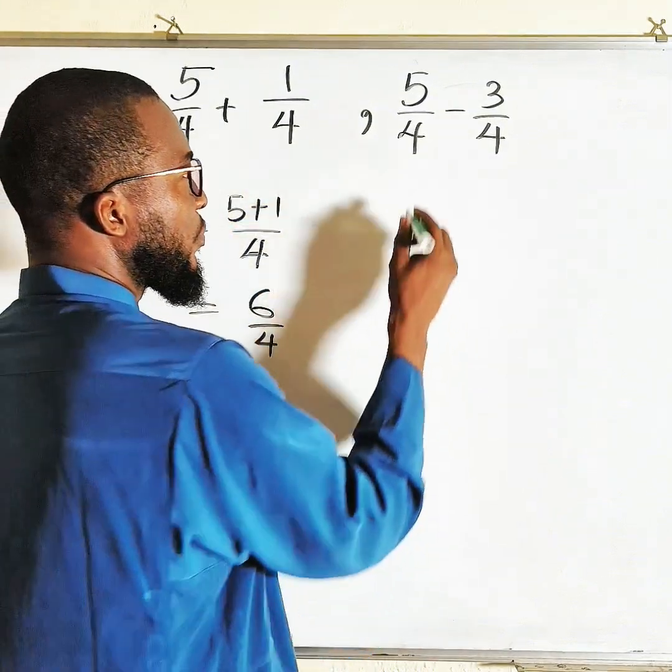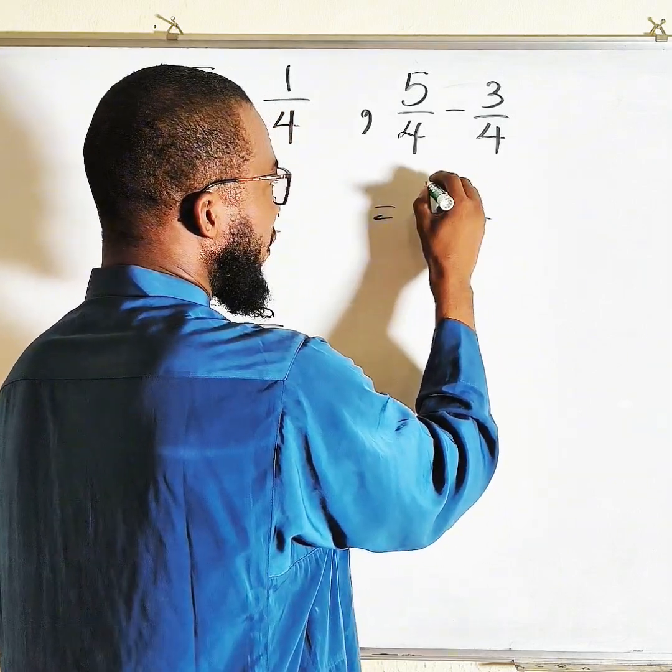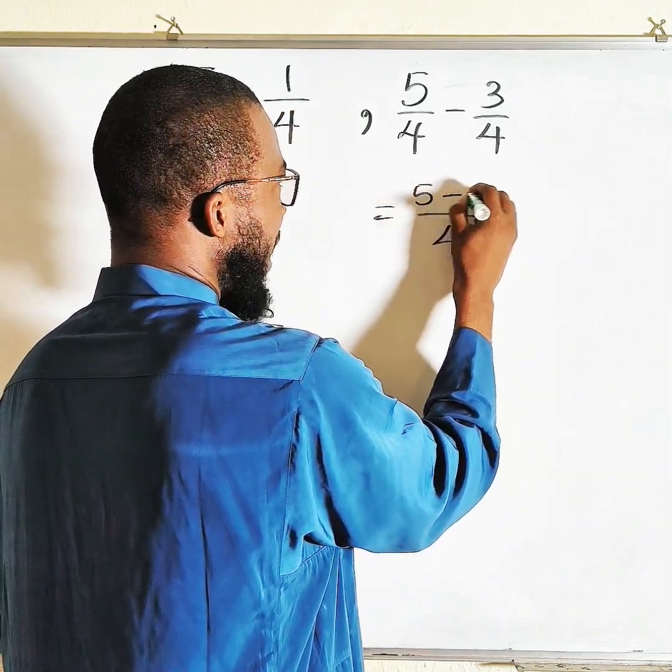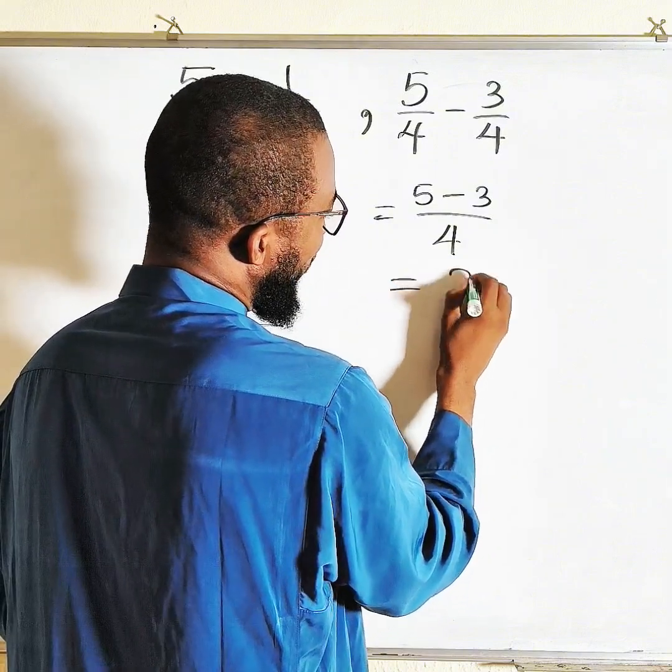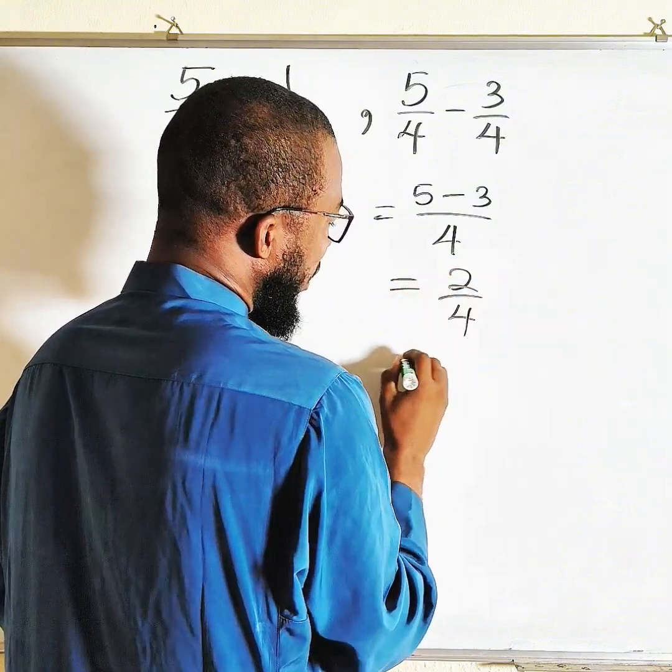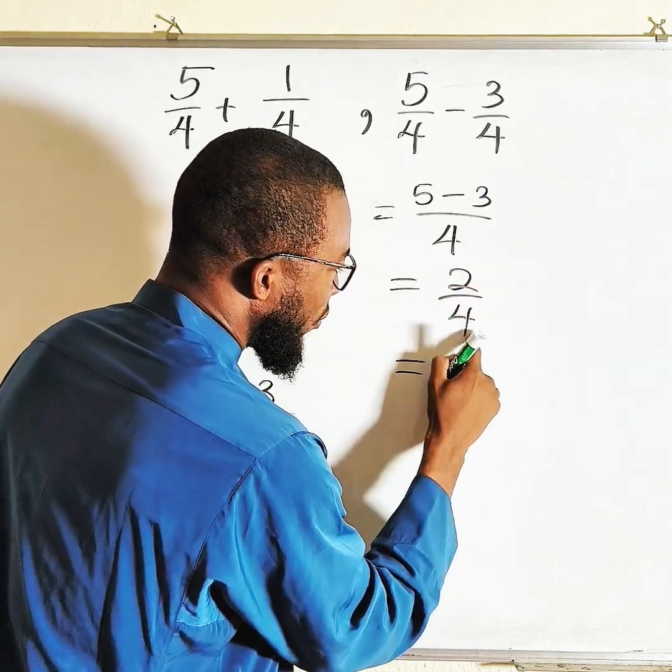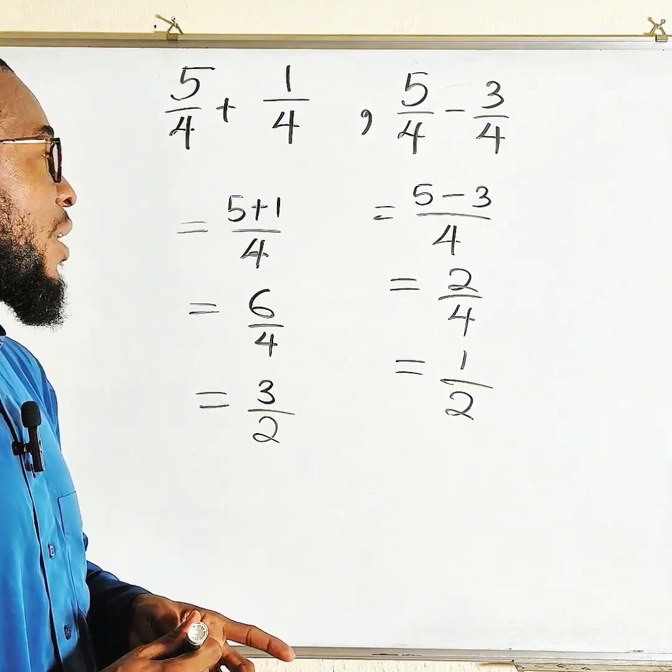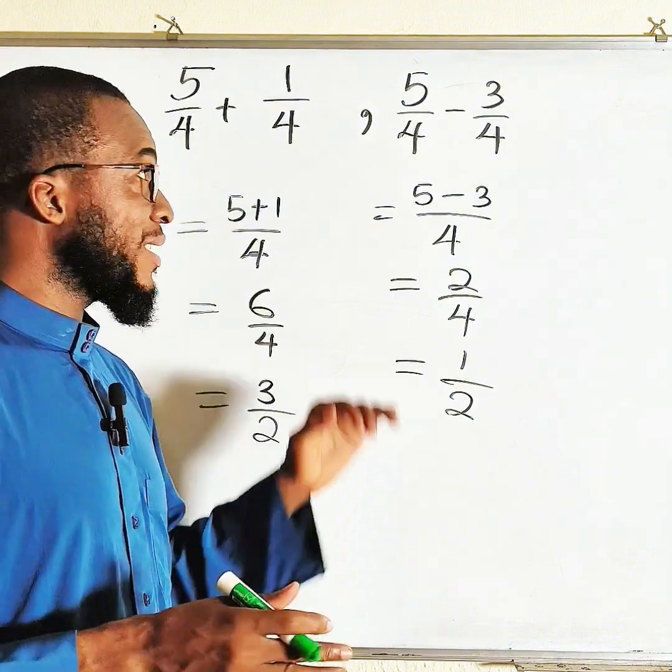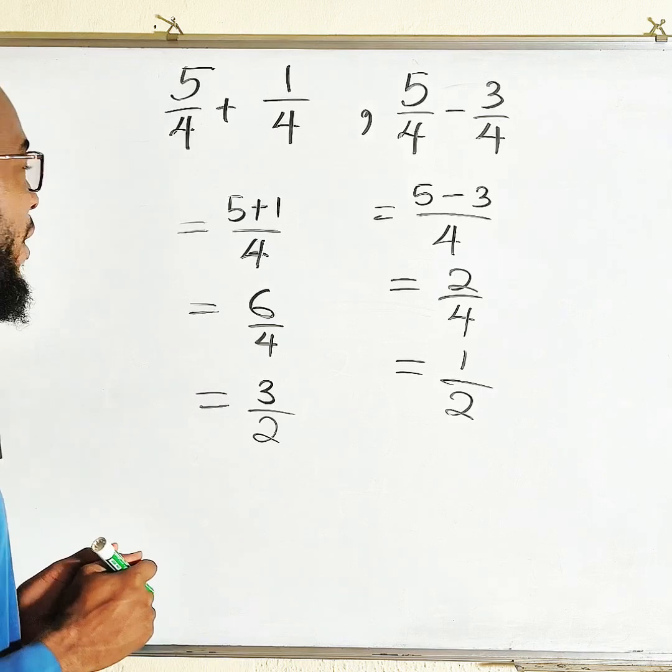Then for this one, the same thing: you take a single denominator which is four, then you subtract the numerators. Five minus three is two, divided by four. This can also be reduced because two can go into two one time and two can go into four exactly two times. So this is how to add or subtract fractions that have the same denominators. Let's see a situation where the numerators are the same.